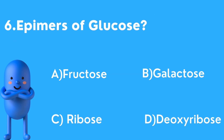Sixth question: Epimers of glucose — options are A) Fructose, B) Galactose, C) Ribose, D) Deoxyribose. Glucose has a hydroxyl group that differs in position. The epimer of glucose is galactose, which differs at carbon 4.